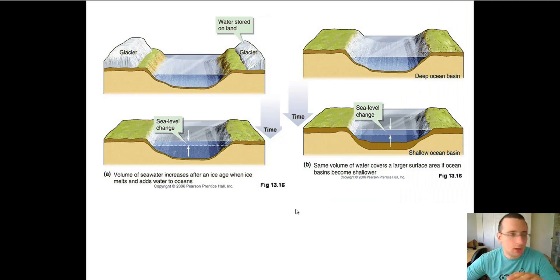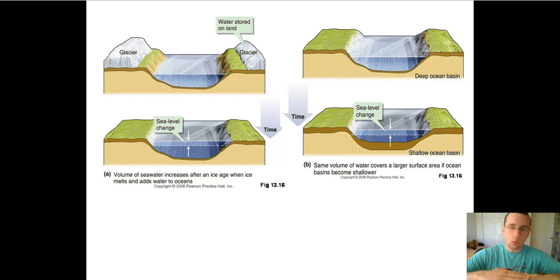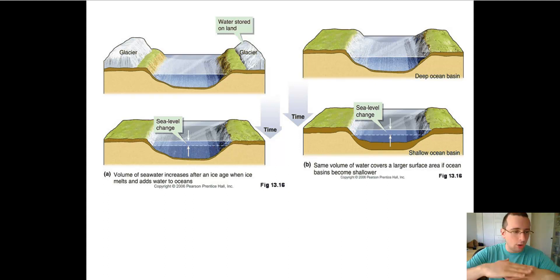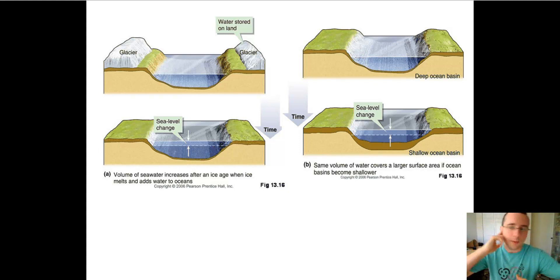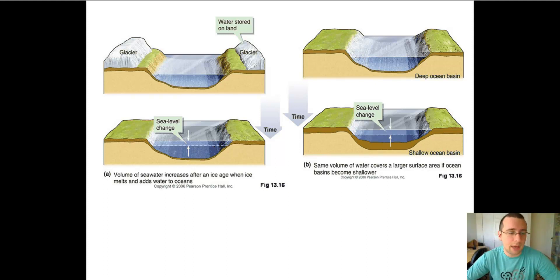Now, looking at more examples of subsidence and uplift, there are two ways the sea level can change. First, if a glacier melts, that water runs down rivers and into the ocean, causing sea level to rise — as you see on the left. Second, if more sediments are added to the bottom of the ocean, the ocean basin becomes shallower and the water level rises because the volume of the basin has changed. So sea level can change both because of glacial melt and because of sediment deposition.